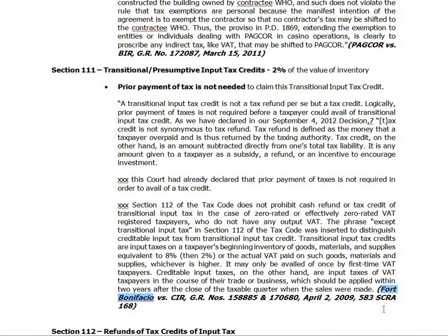Fort Bonifacio said they would avail of Section 111 — the transitional or presumptive input tax credits — because they were now a VAT-registered entity. The BIR said they could not avail of this provision because there must be prior payment of tax. The BIR argued there was no input VAT paid for that land purchase, so why consider a transitional input tax credit.